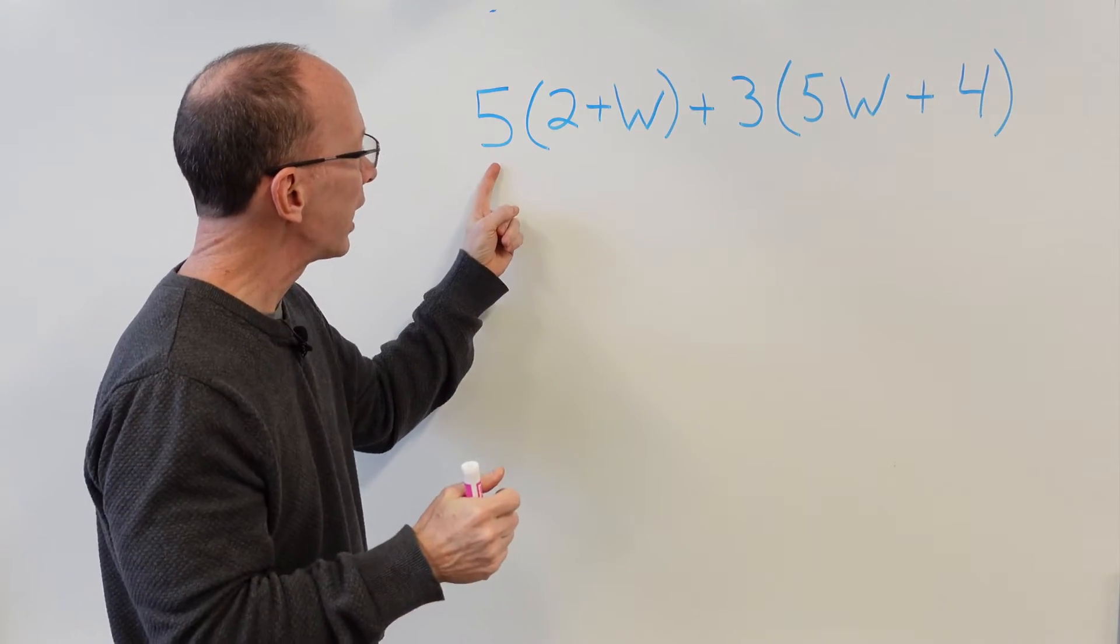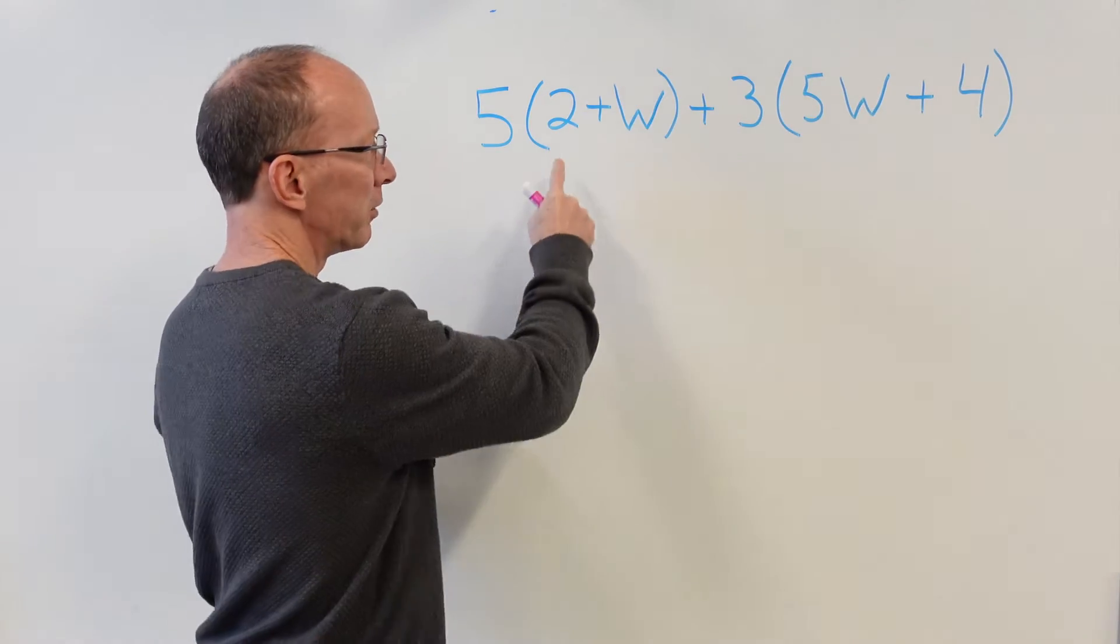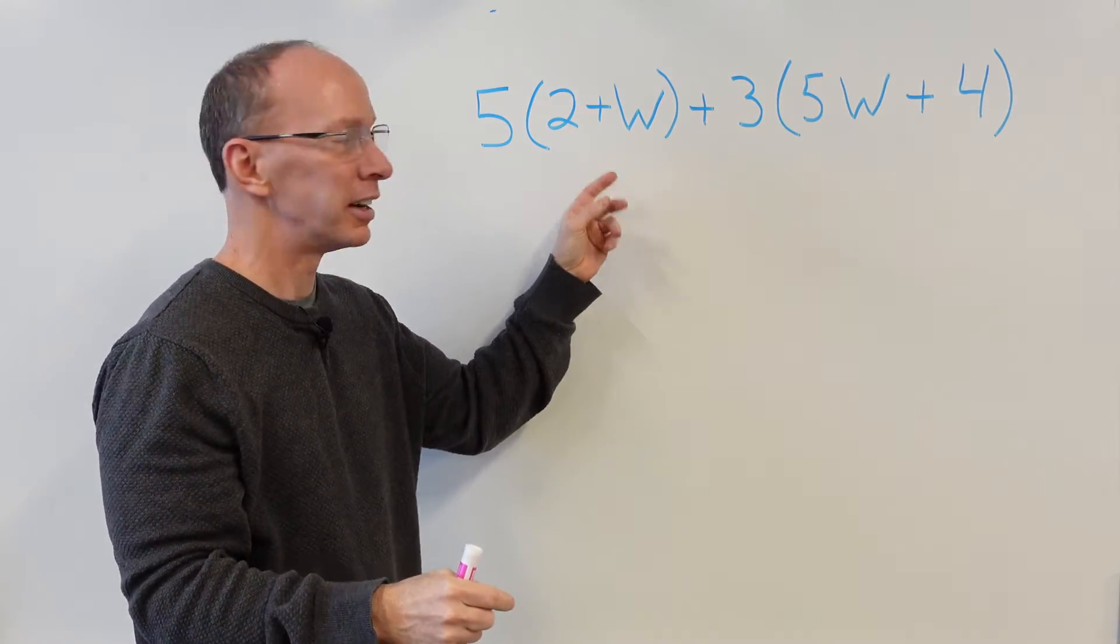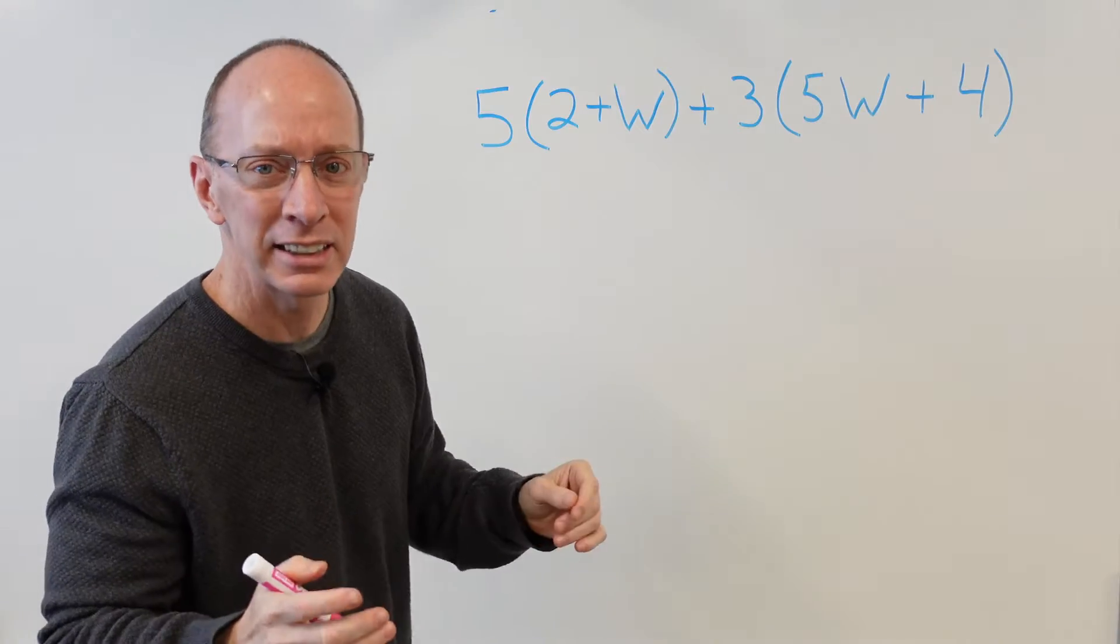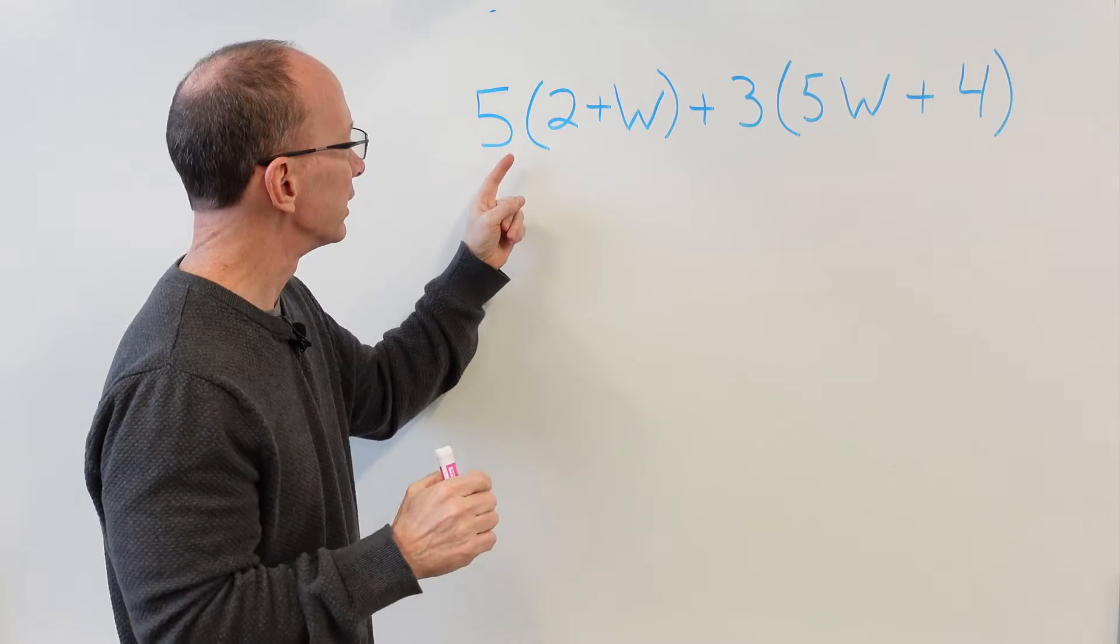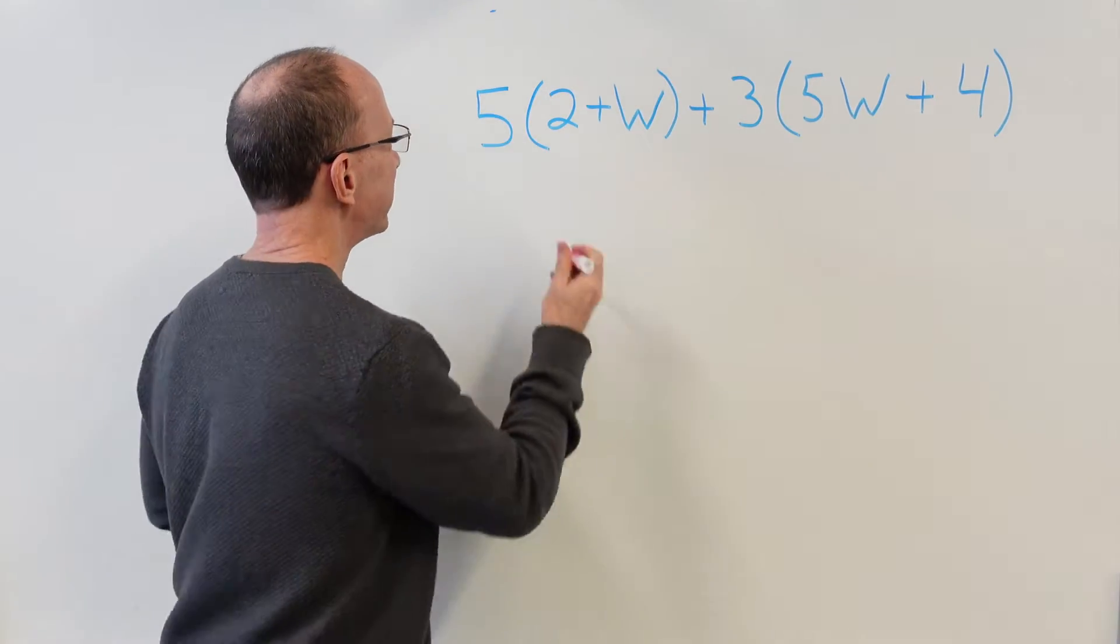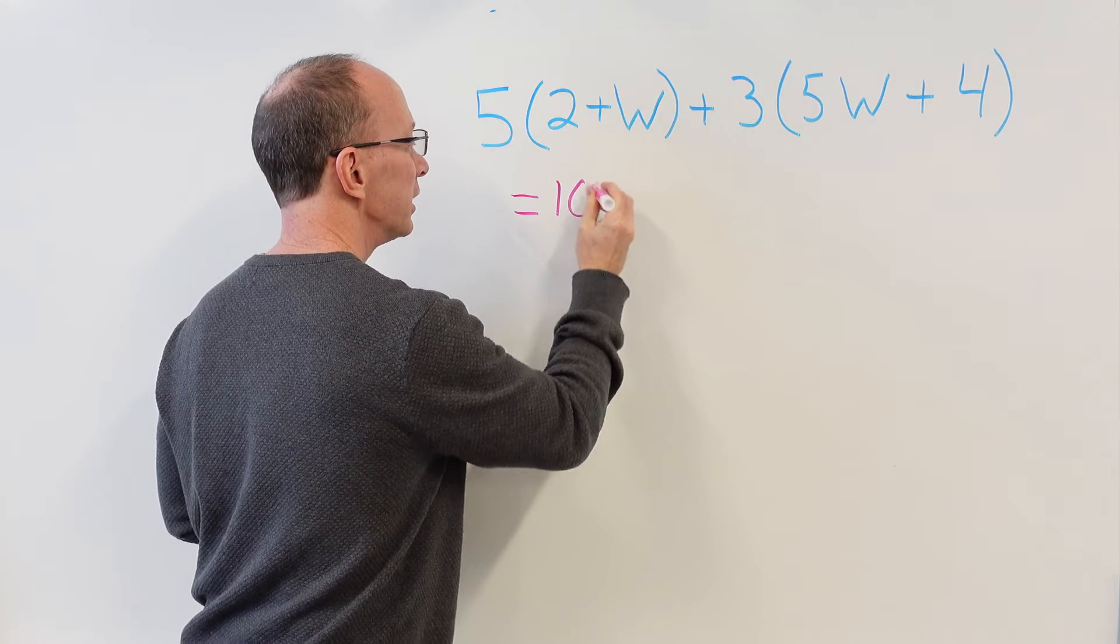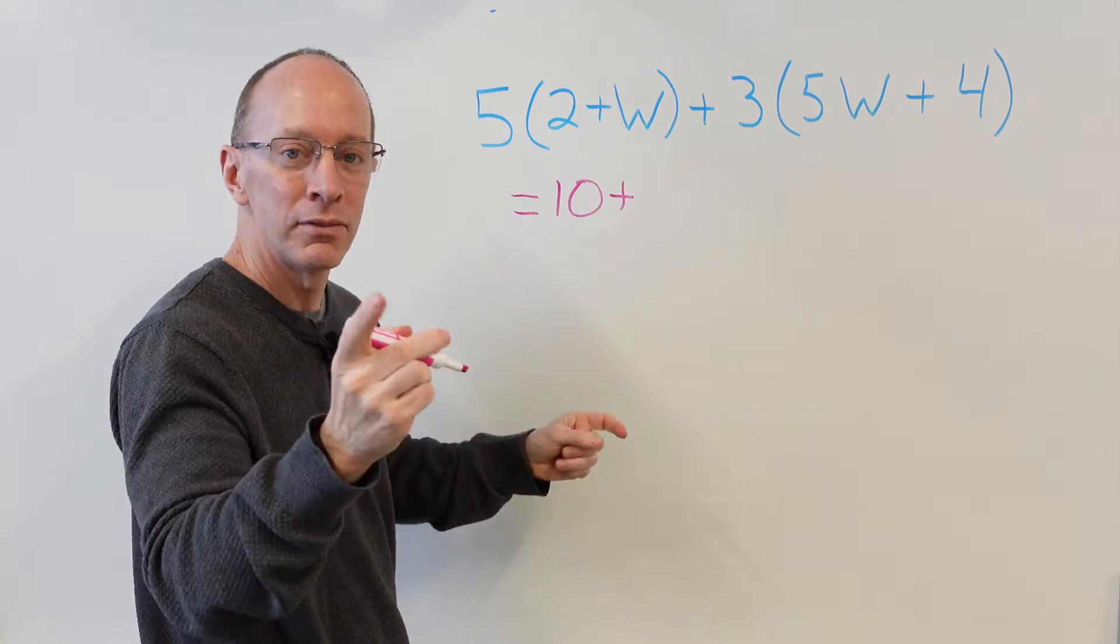Let's begin here. We want to take 5 times 2 plus w. Now remember, if that was 2 plus 3, I could add those two together and then multiply it. But we have w, and w is an unknown variable. We're not sure what it is yet. So 5 times 2, what is it? 10. I'm going to put 10 plus 5 times w, 5w.